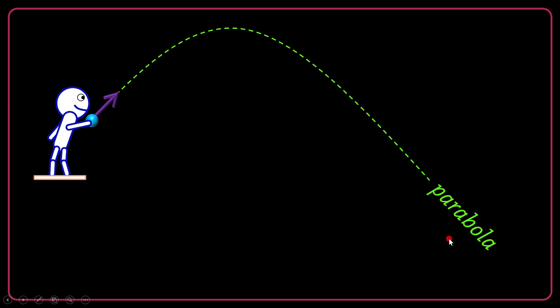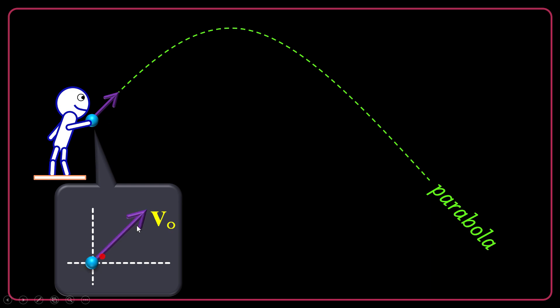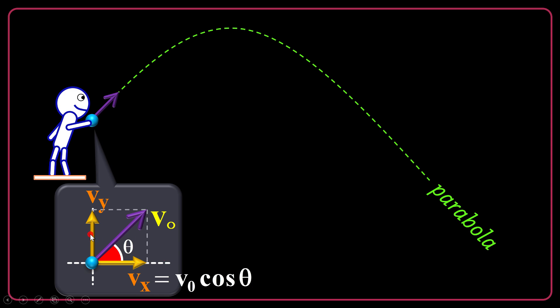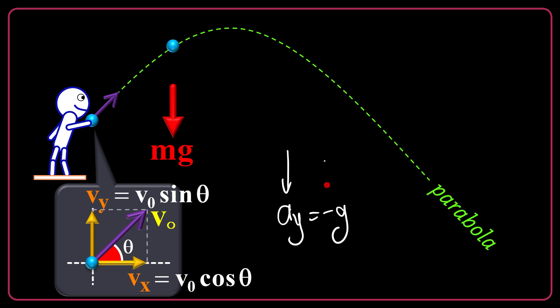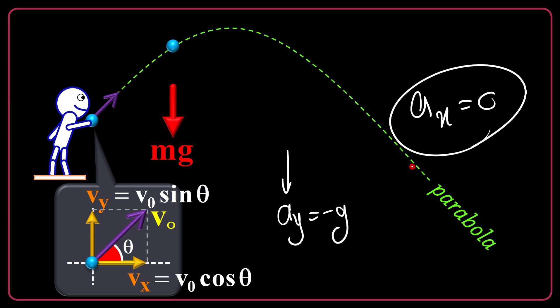If you threw the object with a deviation from vertical, it will experience a parabolic trajectory. At the beginning, let's say the initial vector for the velocity is v0, decomposed into two horizontal and vertical components vx and vy. If the angle between v0 and the horizontal is theta, vx is the adjacent component, so it's v0 cosine of theta, and vy will be v0 sine of theta. At any point on the trajectory, the object will be acted just by vertical downward gravitational pull. So the vertical acceleration ay will be negative g, and horizontally ax will be zero.